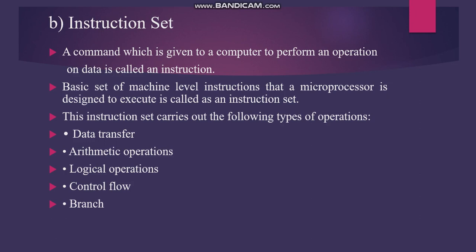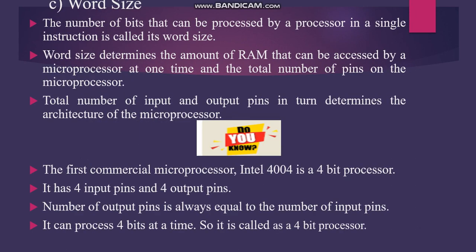Control flow instructions control the flow of the microprocessor. They can stop the flow of instructions or branch away from the main program. Examples include call instructions and jump instructions.